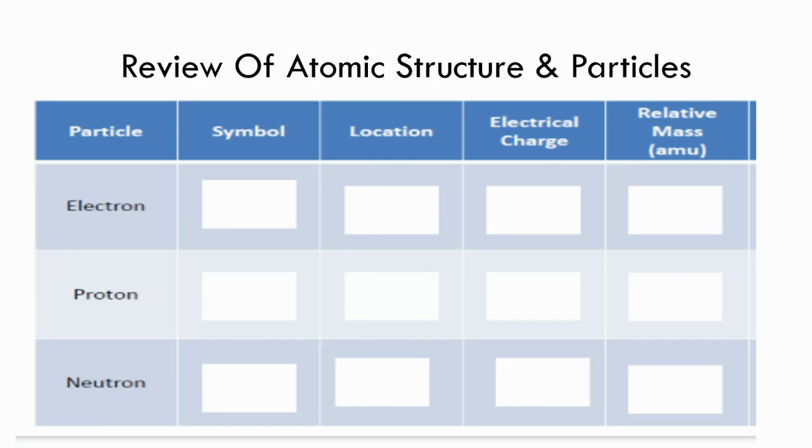So let's first start with the electron. We know the electrical charge of the electron is negative. We know the symbol for negative is a minus sign or negative sign. The location is in the electron cloud.